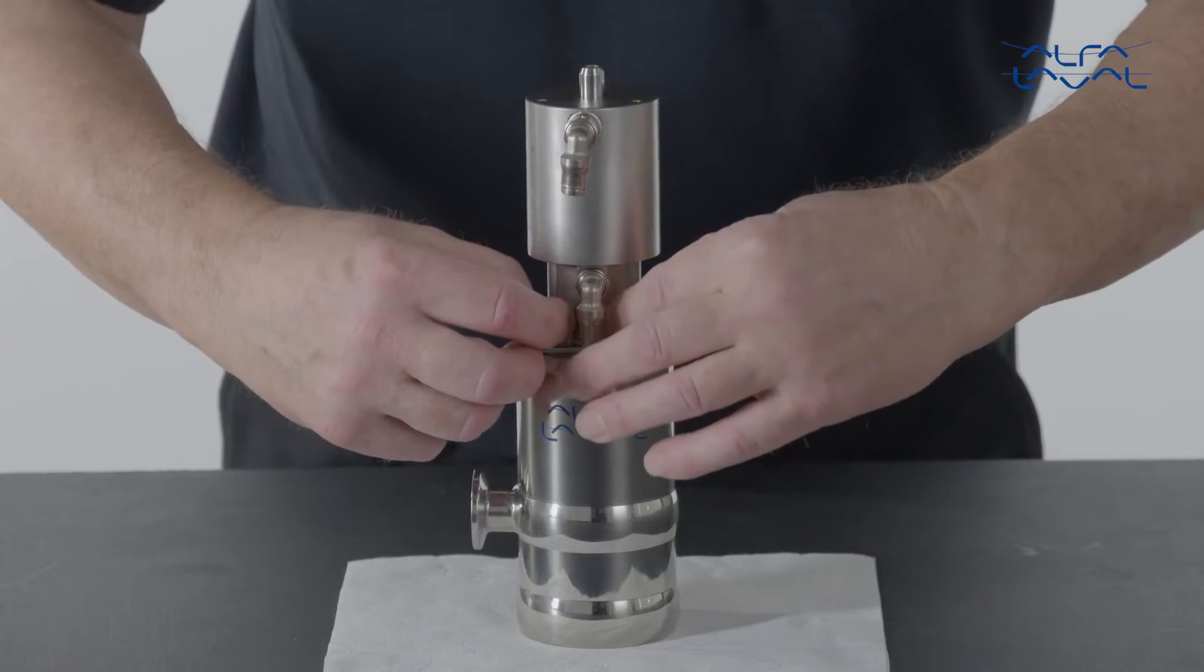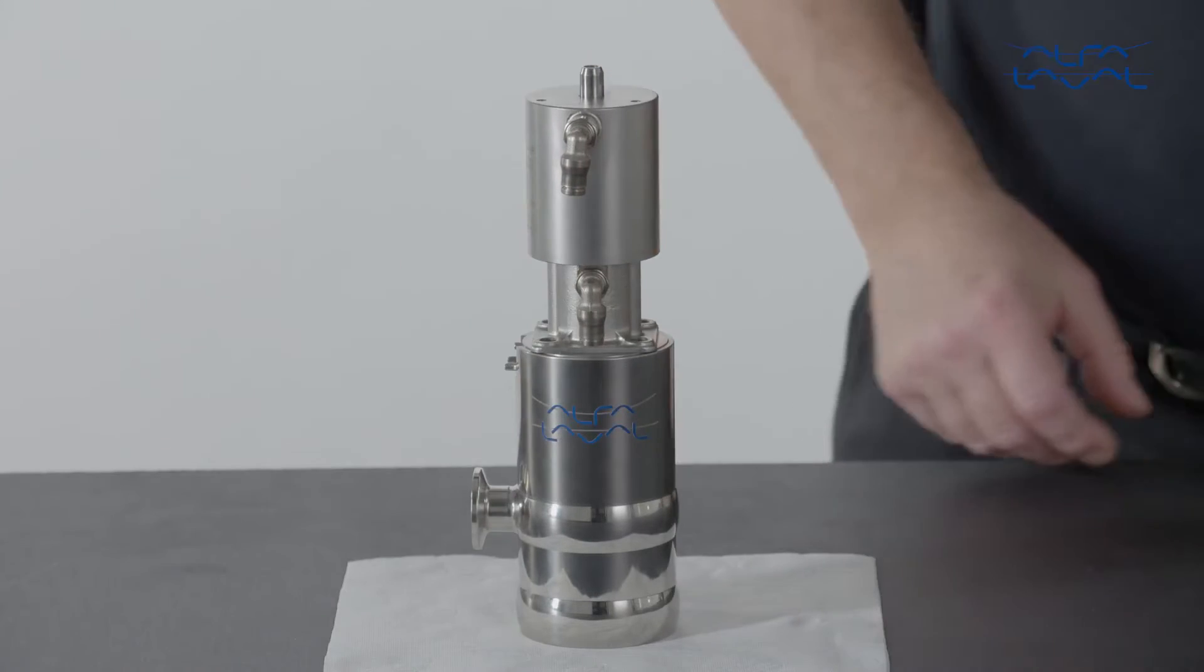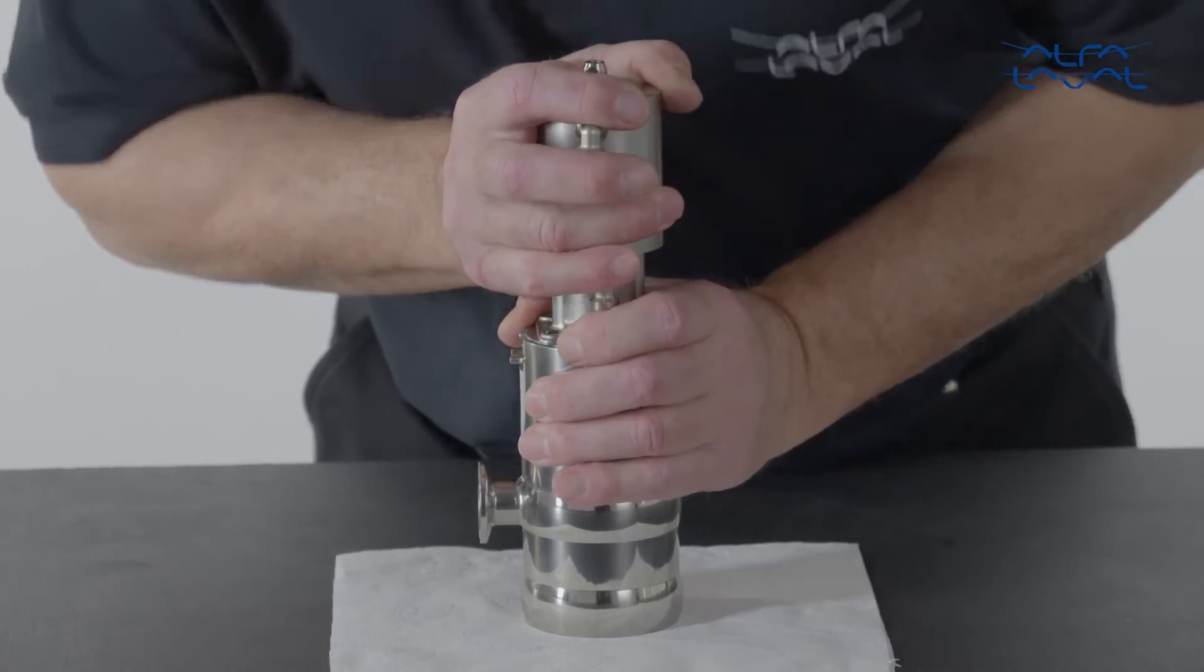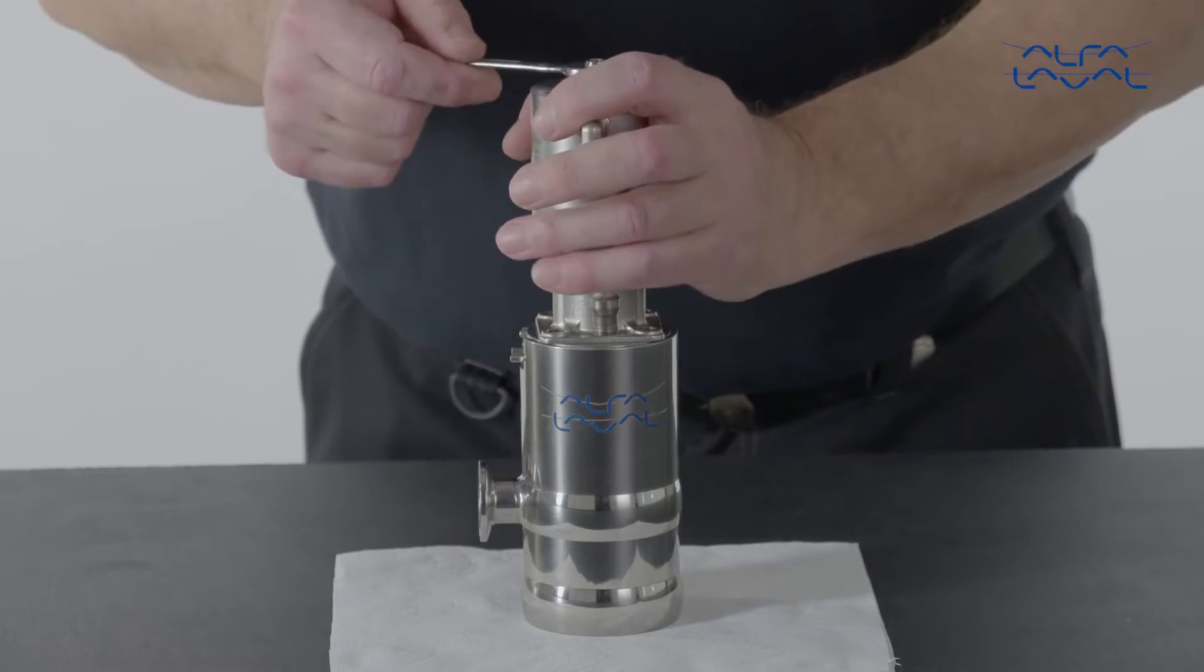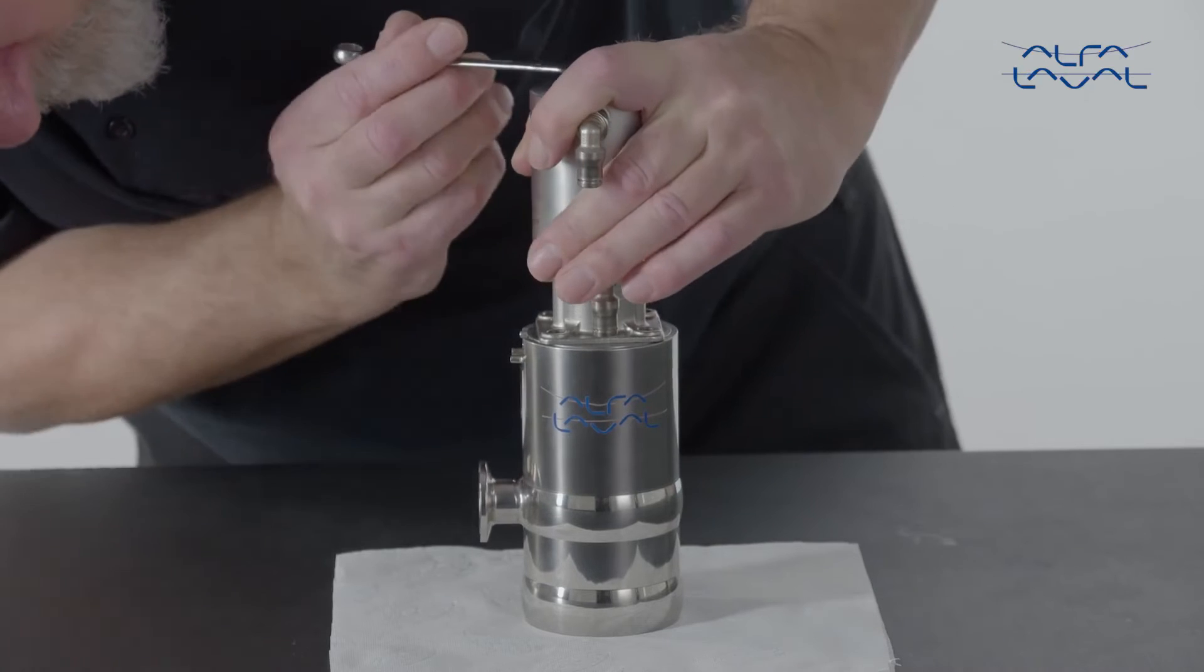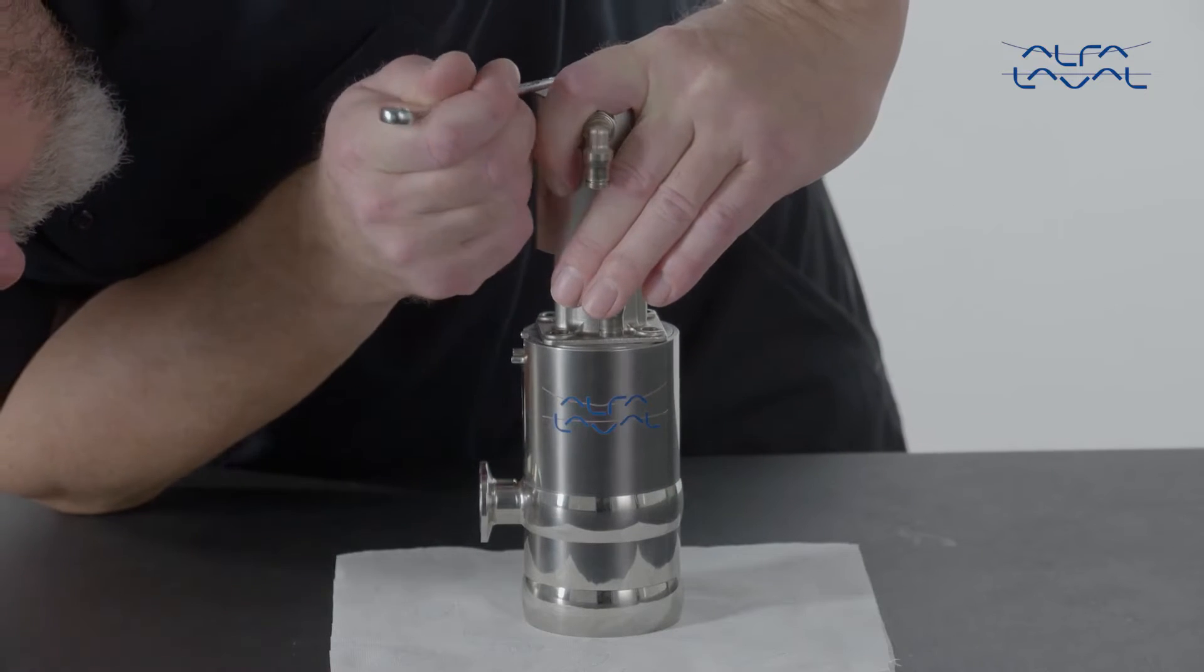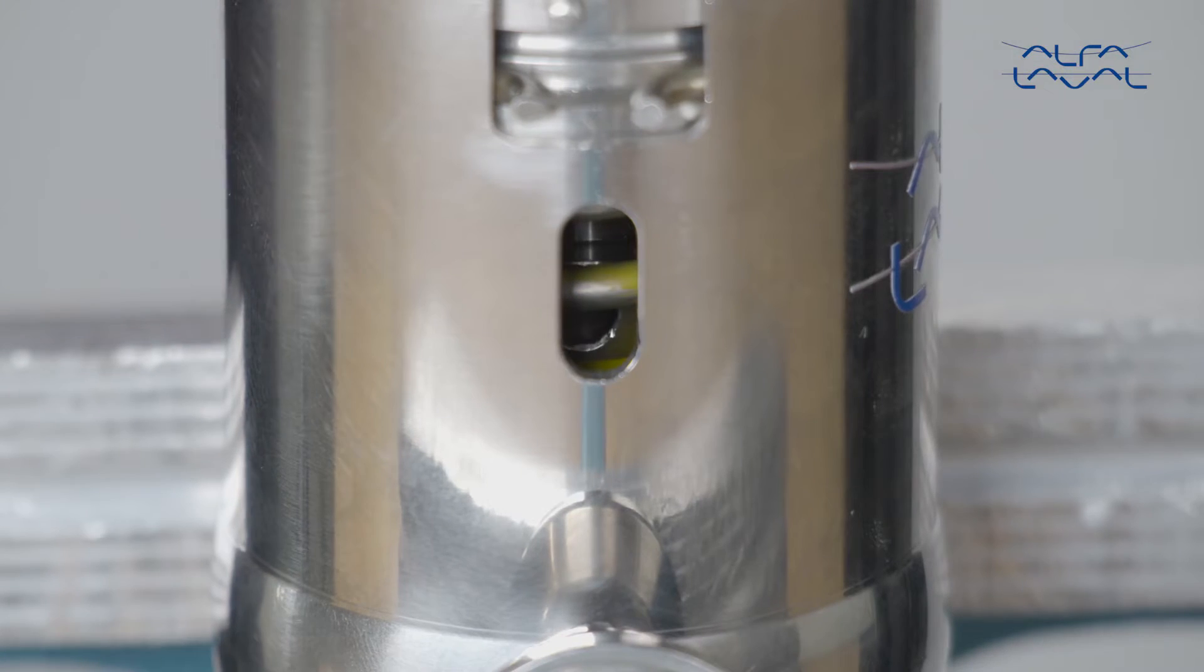First, remove the screws that hold the actuator in place. Now rotate the actuator piston counter-clockwise to demount it. In case the actuator sits too tight, use a wrench and rotate the actuator spindle until the hole on the piston is aligned with the opening.